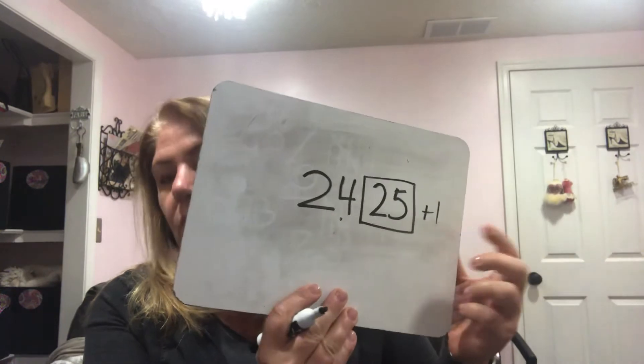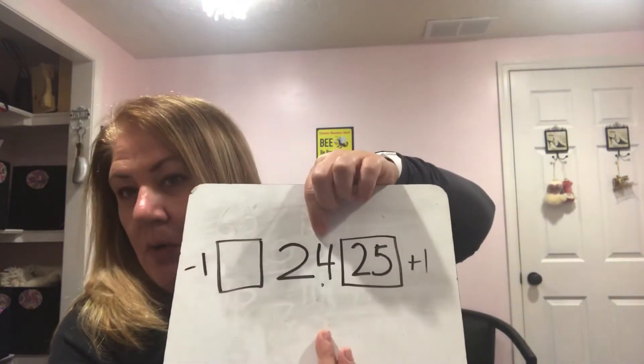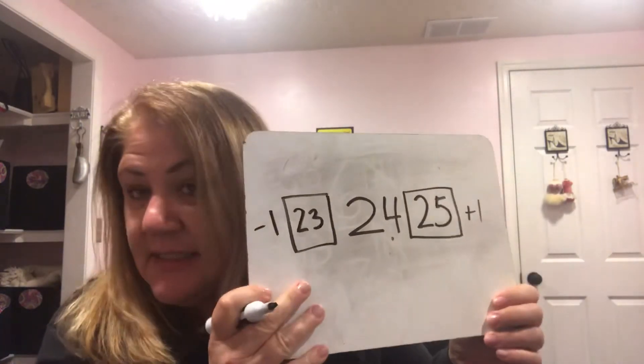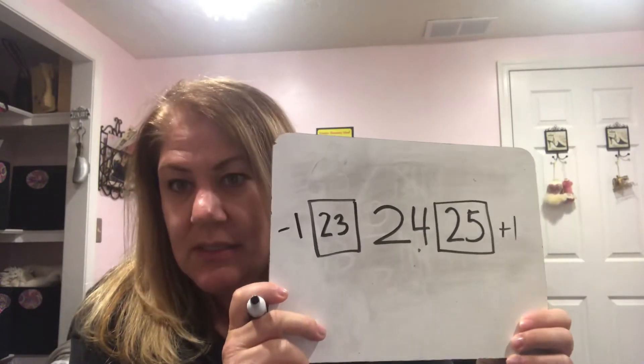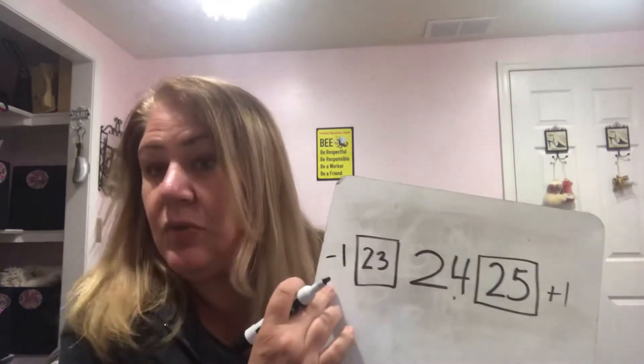What's one less than 24? One less is minus one. I go to the ones place, which is four — one less than four is three. My tens place stays the same, it's still 20, two groups of 10, and now three ones. One less than 24 is 23.